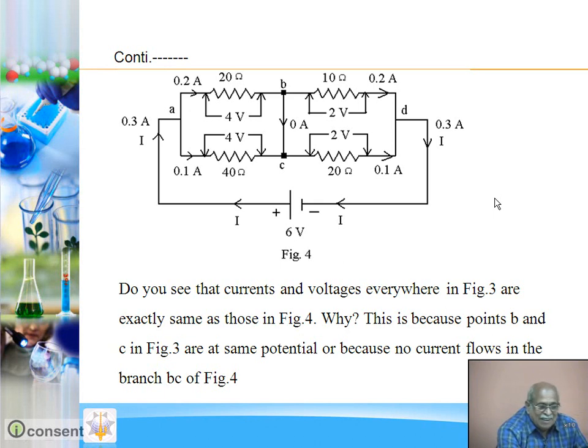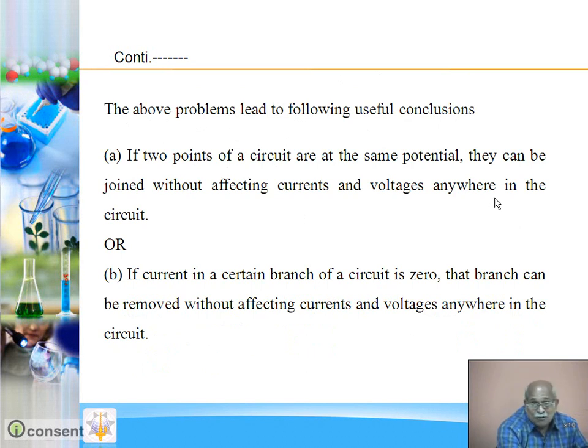Very interesting and very important conclusion. Remember these two conclusions - very useful in solving problems. First: if two points of a circuit are at same potential, these two points can be joined without affecting current and voltages anywhere in the circuit. Second conclusion, in fact the same conclusion put in another words: if current in a certain branch of a circuit is 0, that branch can be removed without affecting current and voltages anywhere in the circuit.